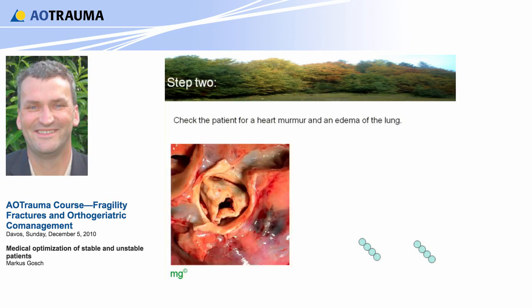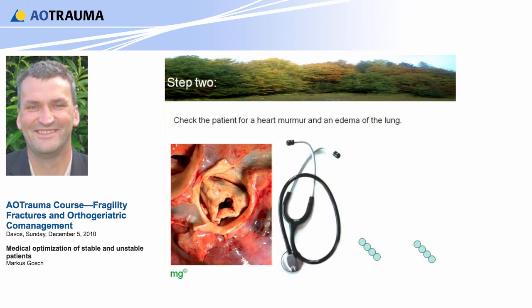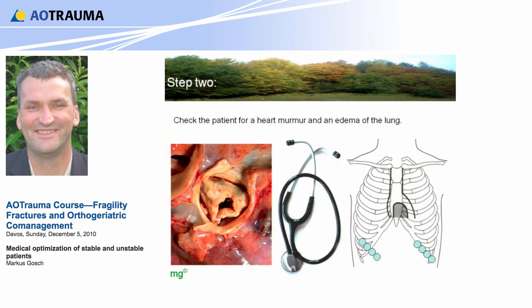Aortic stenosis is a very severe disease for an elderly patient. It's not really a contraindication for the operation, because you have no possibility to operate the aortic stenosis before the hip fracture. But it's important for the anesthesia colleagues to know whether the patient suffers from aortic stenosis or not, because the management is completely different during the operation. You have this nice instrument in your pocket — it's a stethoscope, and you have to use it. In the second intercostal area you can hear an aortic stenosis. Everyone can hear it — it's really very simple.